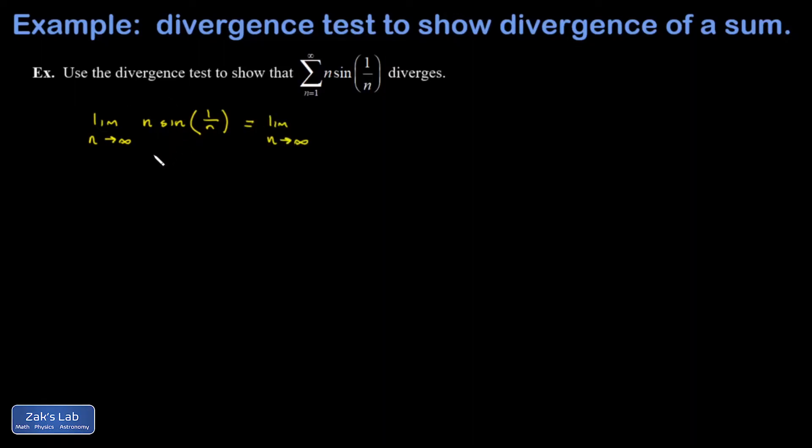And when I write down the limit, I end up with n times sine 1 over n. And when n is large, 1 over n is getting close to zero, and the sine of zero is zero. So this is like an infinity times zero indeterminate form. I don't know what it comes out to.